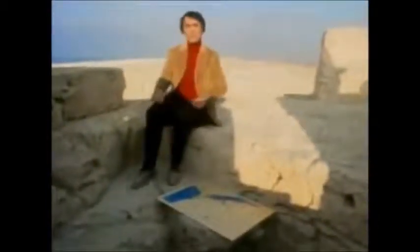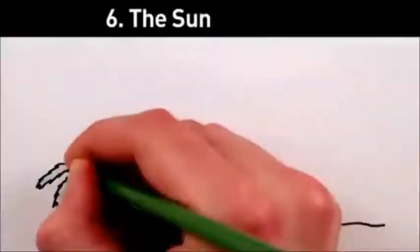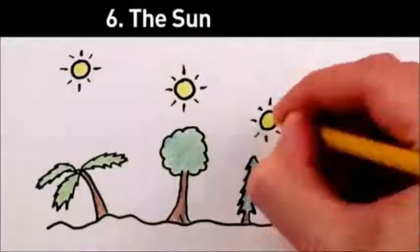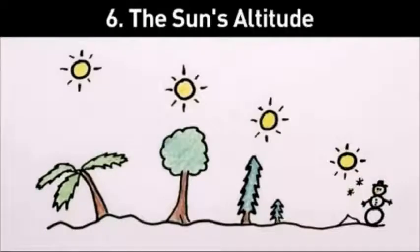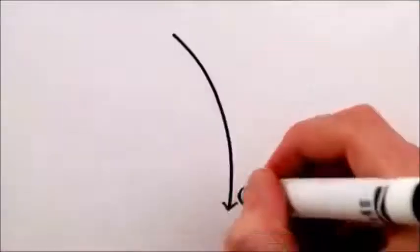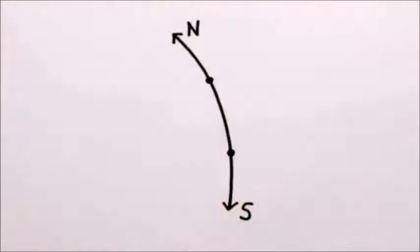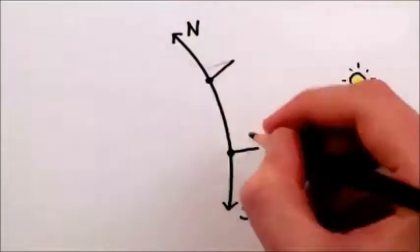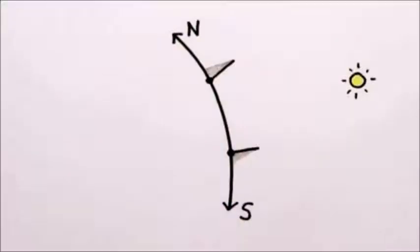Eratosthenes asked himself how it could be that at the same moment, a stick in Cyene would cast no shadow, and a stick in Alexandria, 800 kilometers to the north, would cast a very definite shadow. The Sun gets lower and lower in the sky as you travel away from the equator, and you can use this to directly measure the Earth's curvature. Pick two places a few hundred miles directly north and south of each other, and at noon, measure the shadows cast by a vertical meter stick at each location.